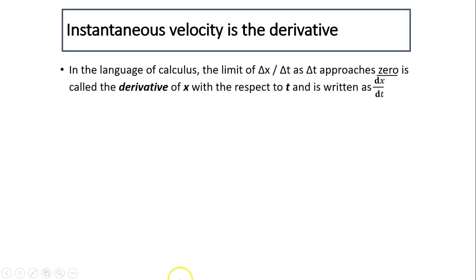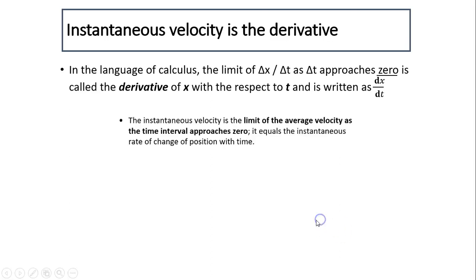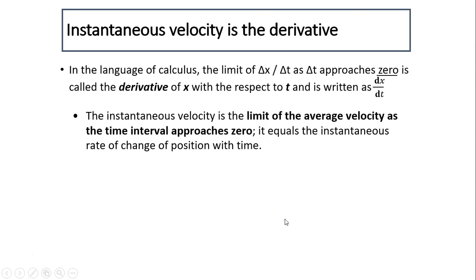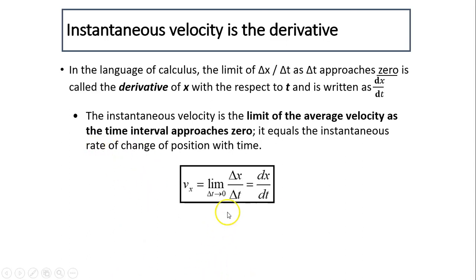Instantaneous velocity is the average velocity in the language of calculus. The limit of delta X over delta T as delta T approaches zero is called the derivative of X with respect to T, written as dx/dt. The instantaneous velocity is the limit of the average velocity as the time interval approaches zero — it equals the instantaneous rate of change of position with time, written as dx/dt.